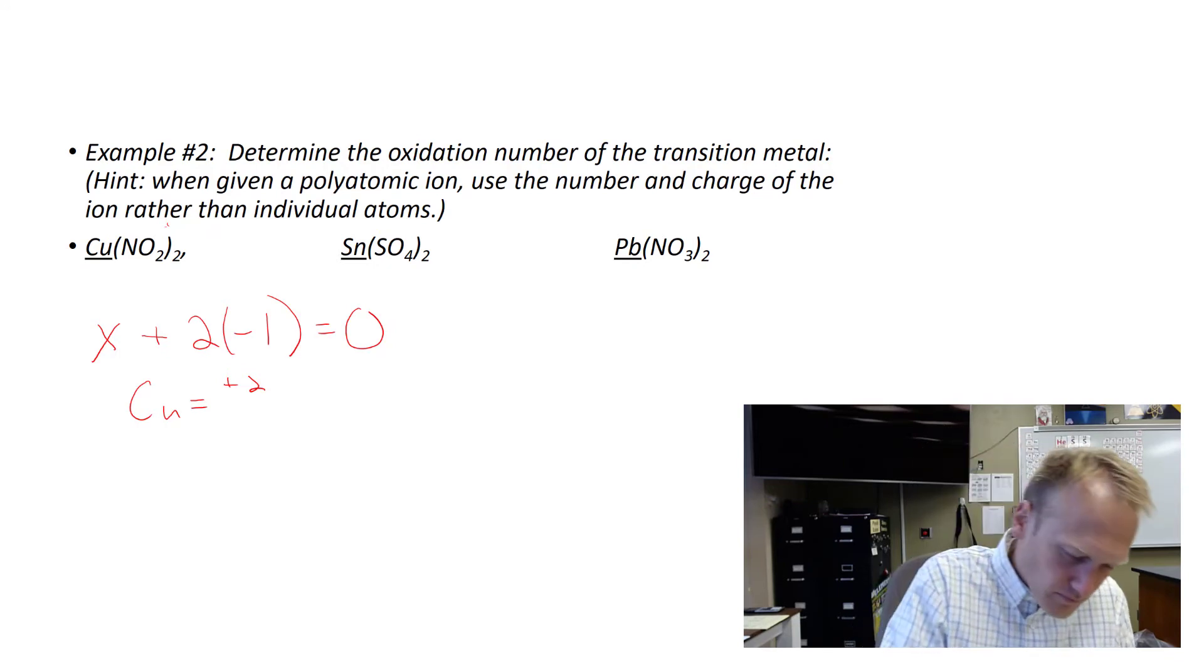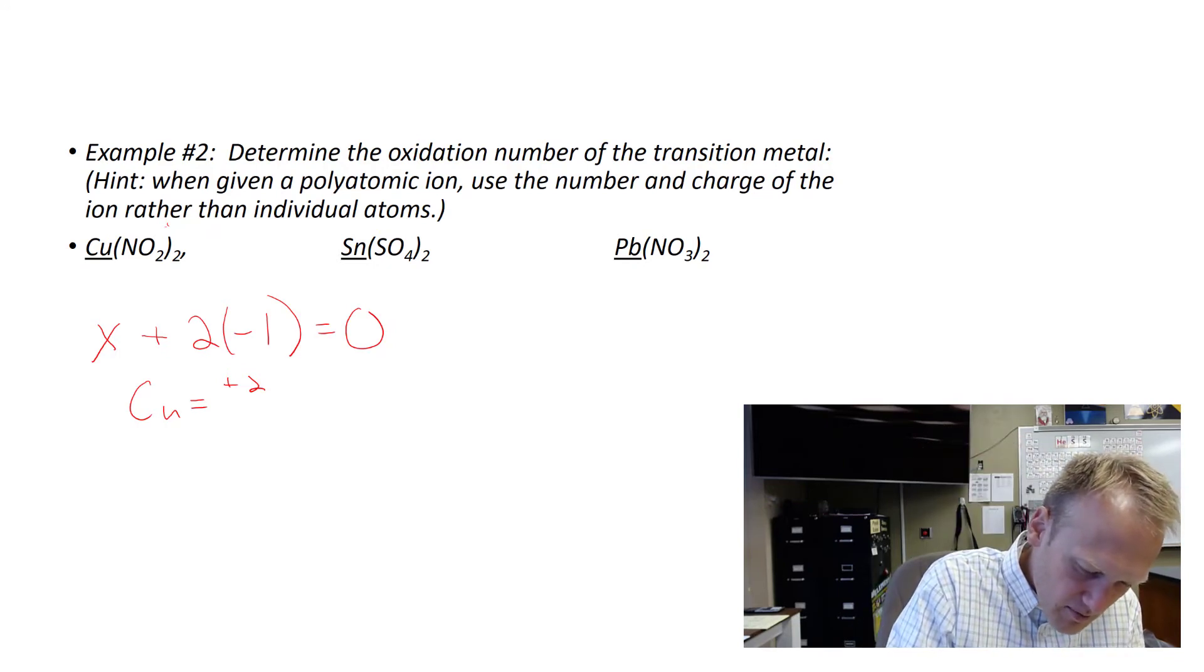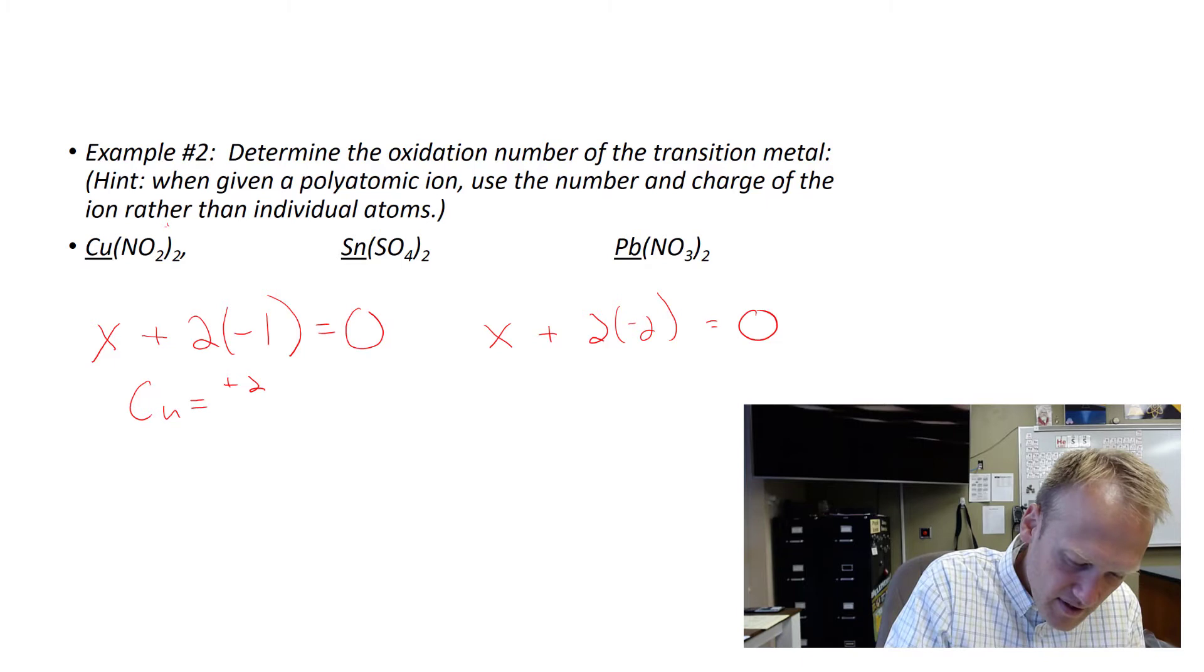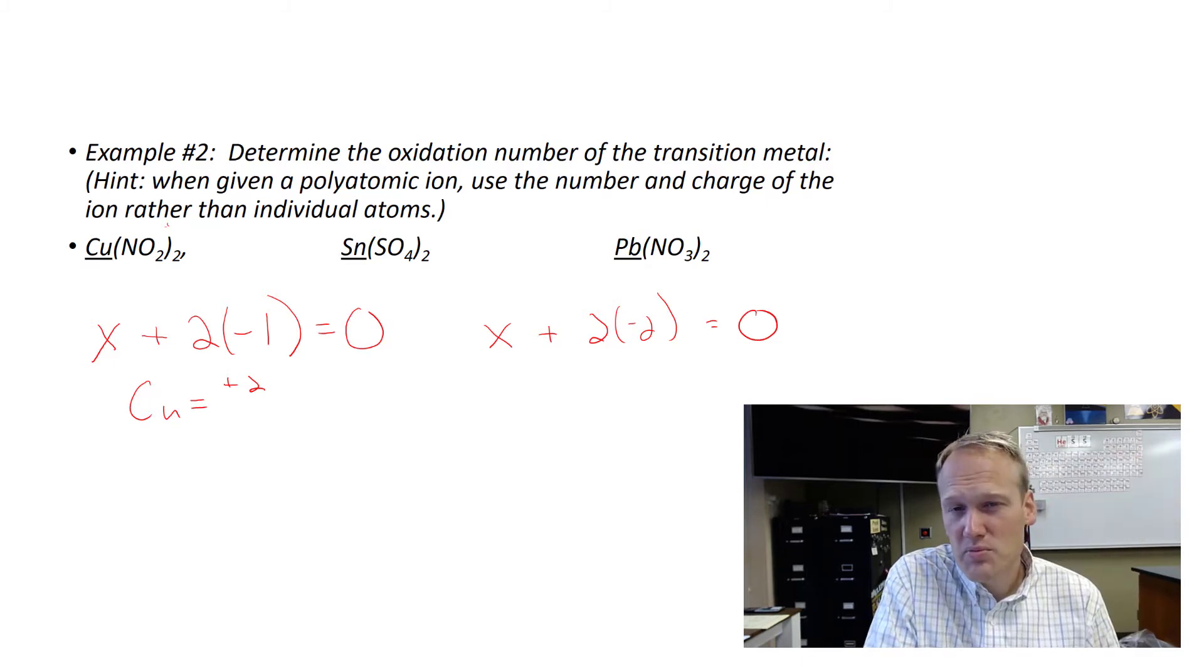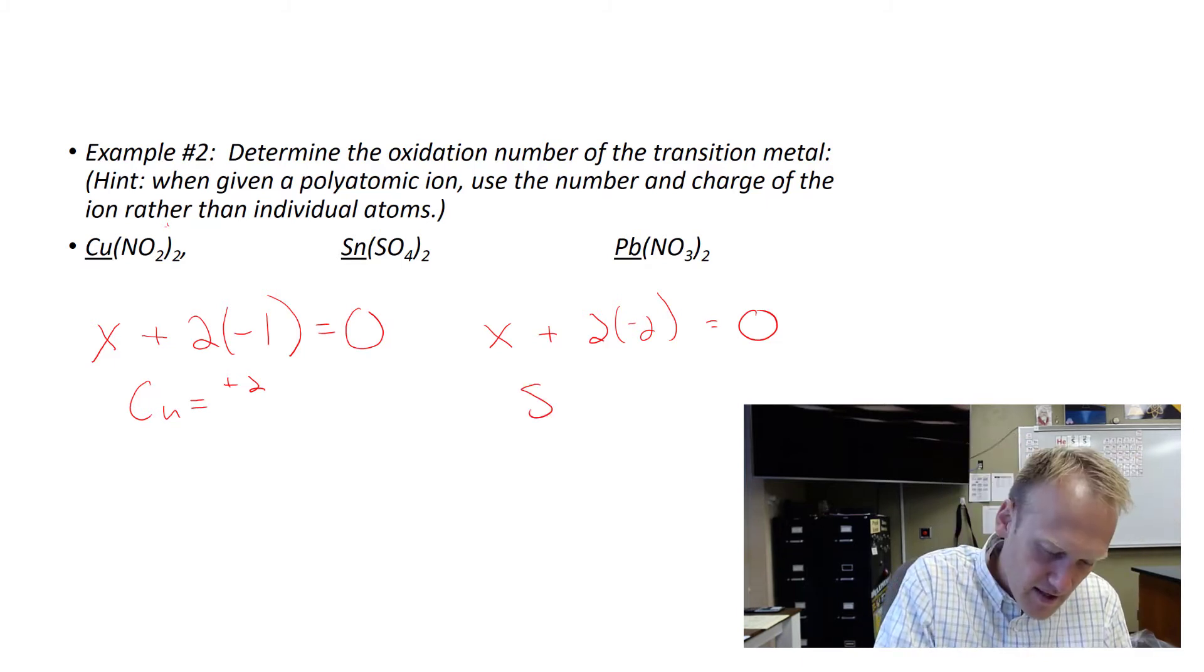Let's try another one. If we look at tin here, tin is underlined, so we're going to make it x. And then we have sulfate. Sulfate is a negative 2 charge, and we have two sulfates. And that equals zero. We can see the solution to this problem is four. And therefore this is tin with a plus four charge.